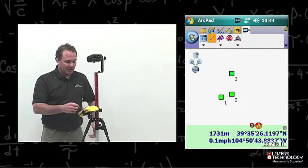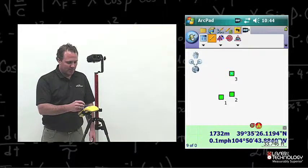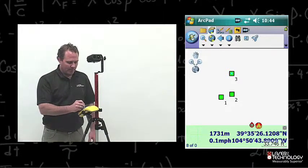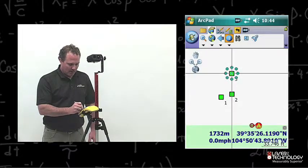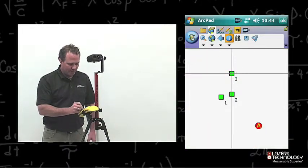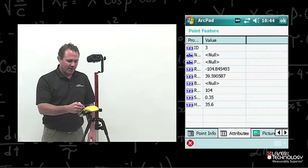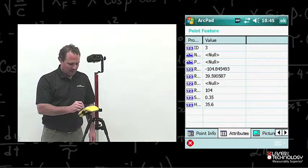At this point, I want to check to see if the height value actually populated into the attributes of point number three. I want to go back to the Browse toolbar, choose identify icon, and tap on point number three. Go ahead and tap the attributes tab and verify that value automatically populated into the field. Hit OK.